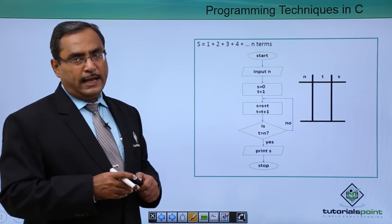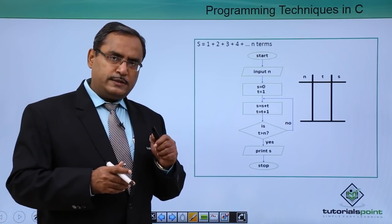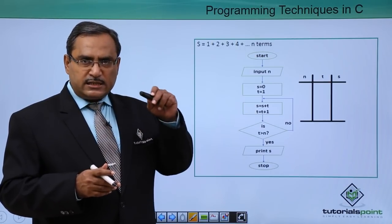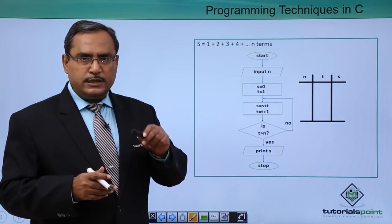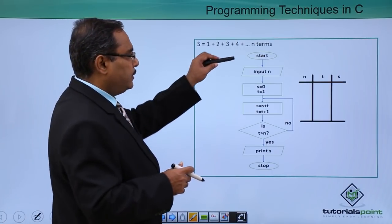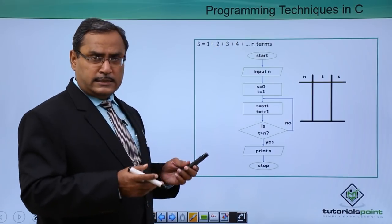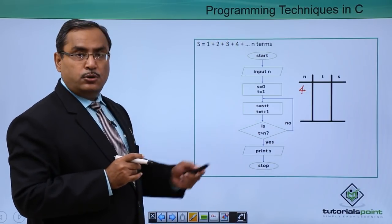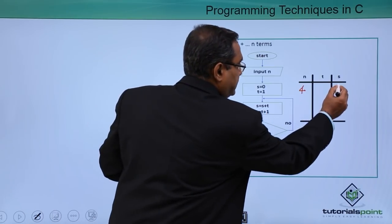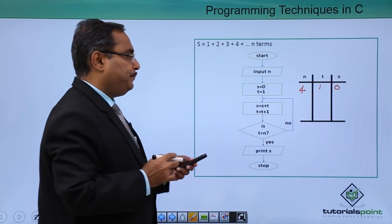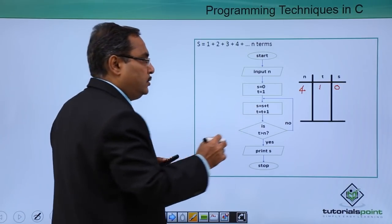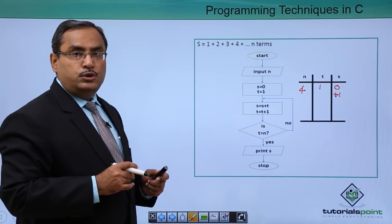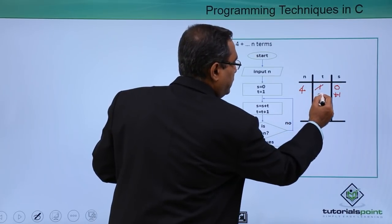This kind of table is called a tracing table. When tracing, do not apply your brain — just follow the logic flow mechanically. Starting: input n = 4. s = 0 and t = 1. Then s = s + t, so s becomes 0 + 1 = 1. Then t = t + 1, so t becomes 2.